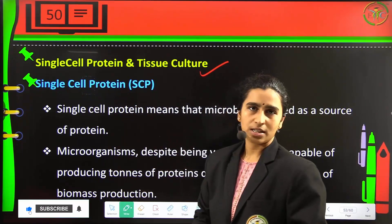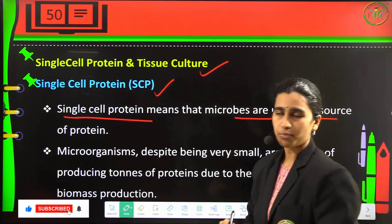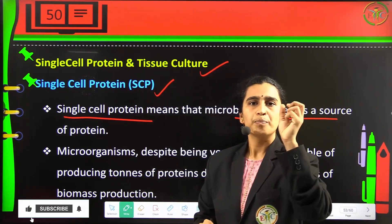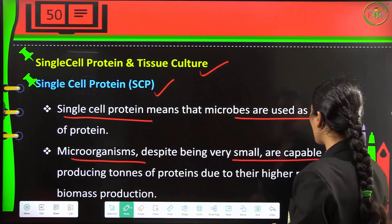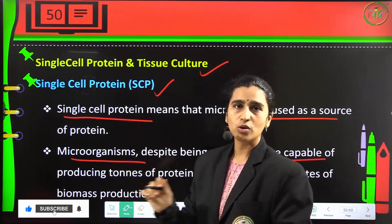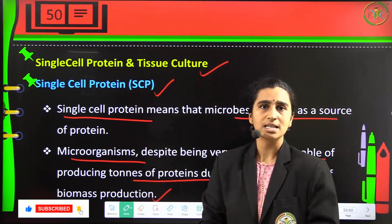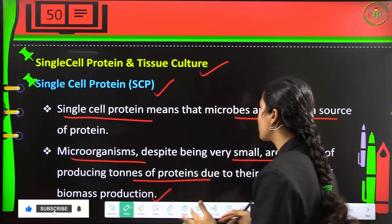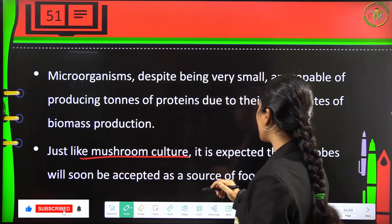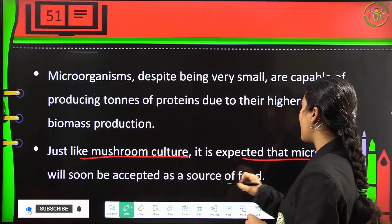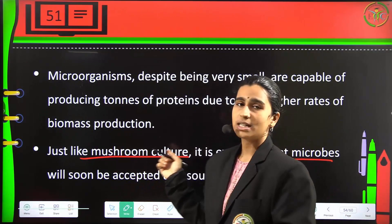Single cell protein (SCP): microbes are used as a source of protein. Microorganisms, despite being very small, are capable of producing high amounts — even tons — of proteins because of their higher rates of biomass production. Just like mushroom culture, it is expected that microbes will soon be accepted as a source of food. We already consume spirulina capsules, which are very rich in protein — it is an algal capsule.